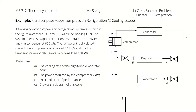A two-evaporator compression refrigeration system, as shown in the figure to the right, uses R134A as the working fluid. The system operates evaporator 1 at 0 degrees Celsius, evaporator 2 at negative 26.4 degrees Celsius, and the condenser at 800 kilopascals. The refrigerant is circulated through the compressor at a rate of 0.1 kilograms per second, and the low temperature evaporator serves a cooling load of 8 kilowatts.